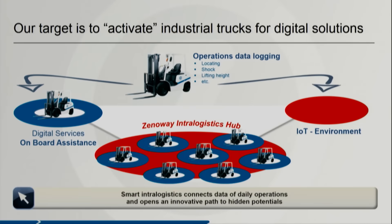How do we activate forklift trucks for digital solutions? We take sensors like the real-time locating system, a battery sensor, to determine the forklift height, the load on the forks, or the weight of the pallets on the fork.